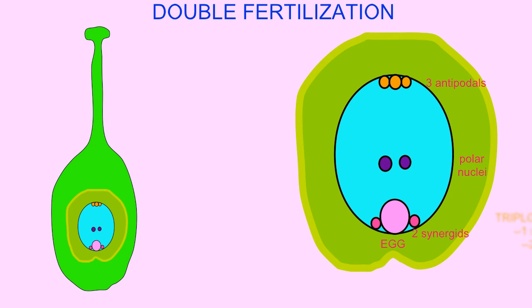These include the egg, which will be fertilized, two synergids on either side of the egg, three antipodals at the opposite end, and two polar nuclei, which may fuse.